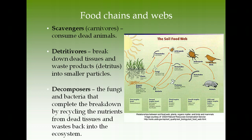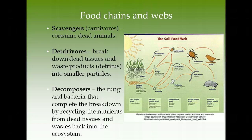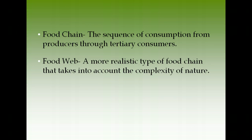Other important parts of the food chain are scavengers, detritivores, and decomposers. Scavengers are carnivores that consume dead animals, like vultures or hyenas. Detritivores consume dead animals further, breaking them into smaller particles called detritus. Decomposers — bacteria, fungi, and mushrooms — complete the breakdown, returning nutrients to the soil. From there, the sun, water, and plants restart the food chain.